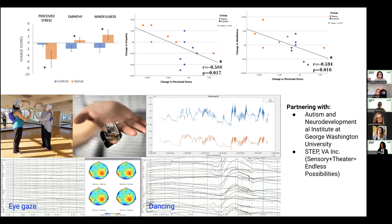We're now using statistical methods to quantify the level of synchrony. We're excited to be partnering with two groups: the Autism and Neurodevelopmental Institute at George Washington University for a co-IRB to run the project collaboratively, and STEP Virginia — Sensory plus Theater Equals Endless Possibilities — a performance arts program working with individuals with disabilities and autism spectrum disorders.